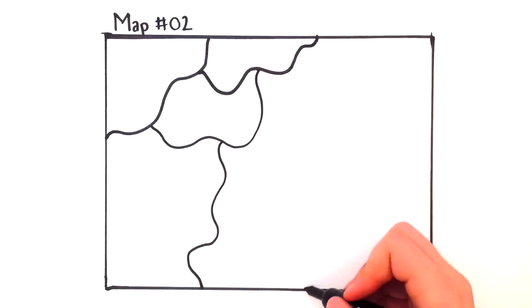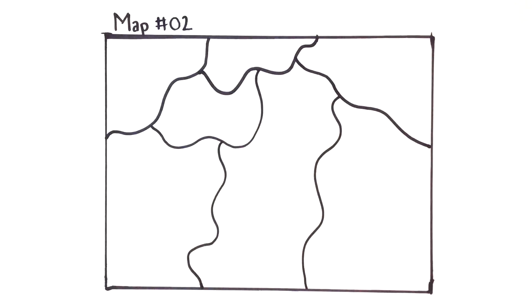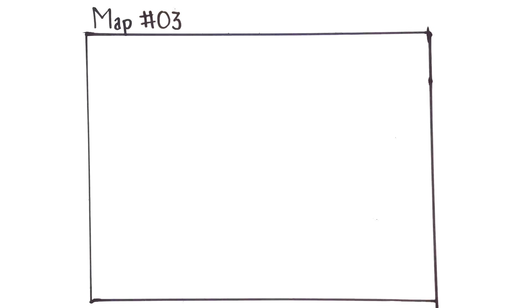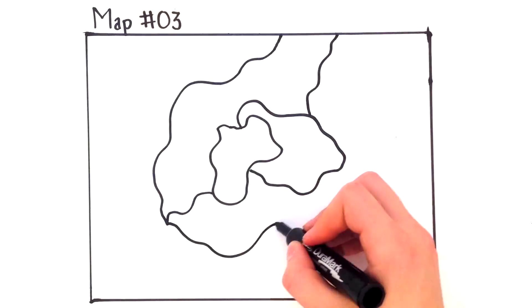So we begin to color in another map with the least number of colors. In this case it took only three colors. Suppose we're given a third map, this one a little more complex.